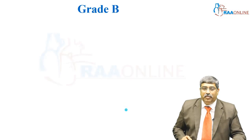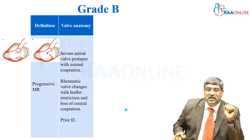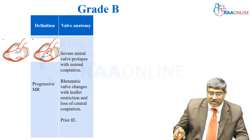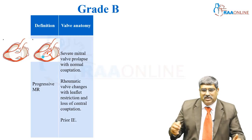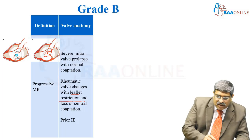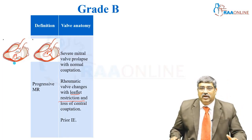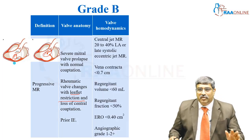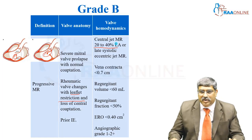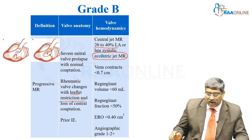Grade B is called progressive mitral regurgitation. Here there is severe prolapse with normal coaptation, or rheumatic changes with leaflet restriction and loss of central coaptation, or prior infective endocarditis. Valve hemodynamics show a central jet MR occupying 20 to 40 percent of the LA, or a late systolic eccentric jet MR.